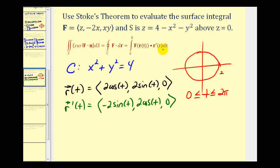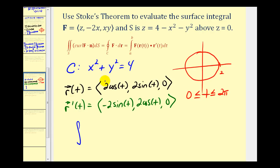Let's see if we can set up this integral in terms of T. The limits of integration will be from zero to two pi. We need to rewrite our vector field in terms of T, using our parameterization. So we have X equals two cosine T, Y equals two sine T, and Z would be equal to zero. So our vector field is Z comma negative two X comma X times Y. Well, Z is zero. Negative two X will be negative four cosine T.